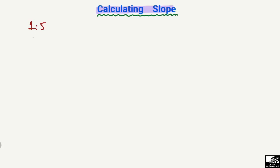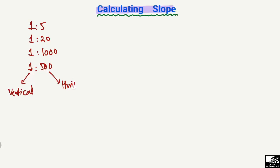First of all, slope is always represented as a ratio — for example, 1:5, 1:20, 1:1000, or 1:500. In this ratio, the left side shows the vertical part of the slope and the right side shows the horizontal part of the slope.